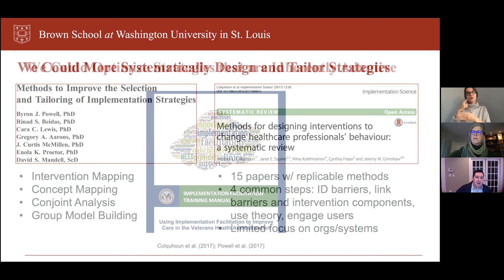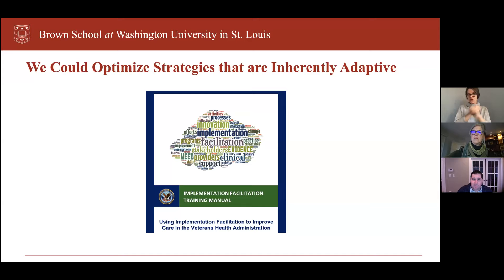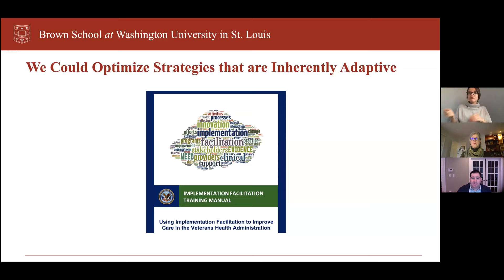Today we'll provide examples of intervention mapping as well as a tool to link CFIR and ERIC implementation strategies. Another approach to ensuring strategies are contextually appropriate is to identify and optimize strategies that are inherently adaptive — for example, facilitation, which is a meta-strategy that is highly flexible. Facilitators could work with a variety of settings to understand their context and identify and apply appropriate implementation strategies.